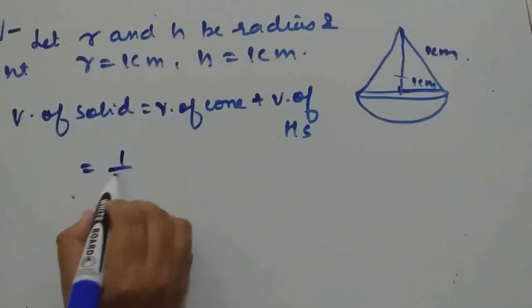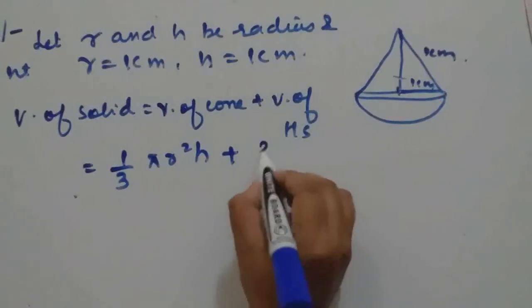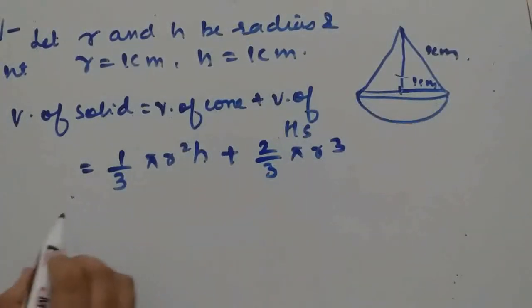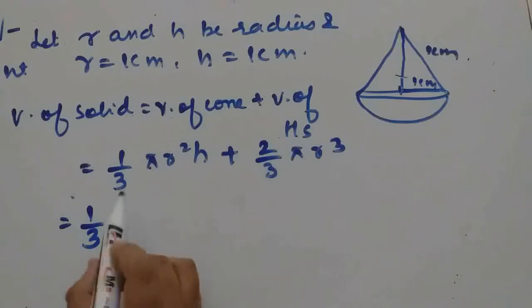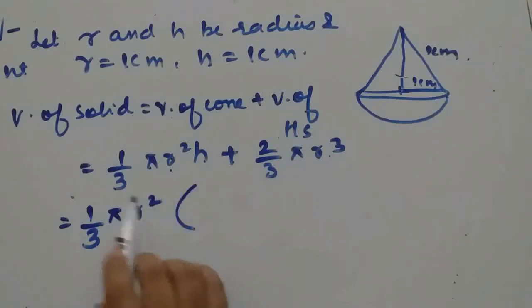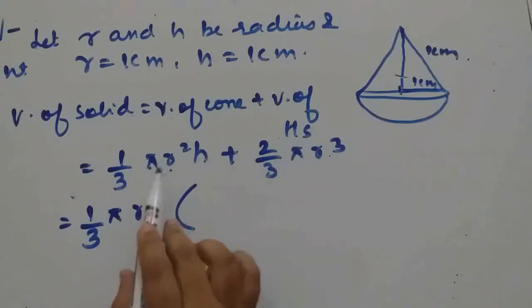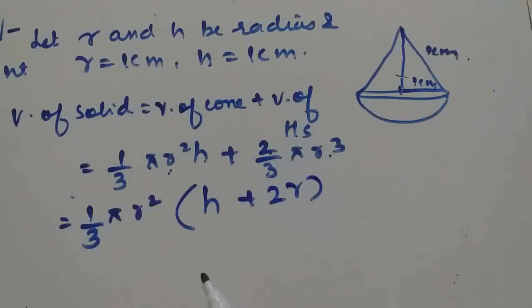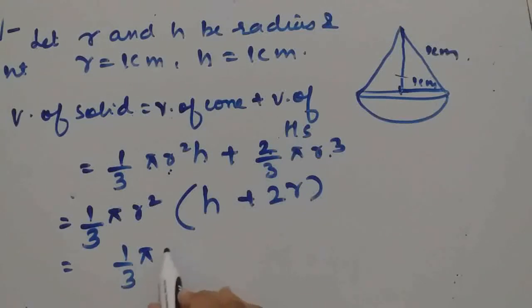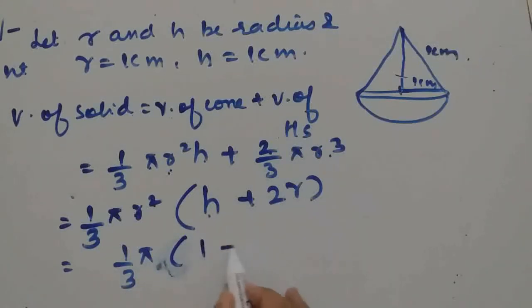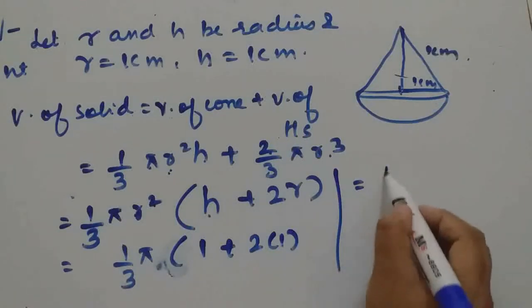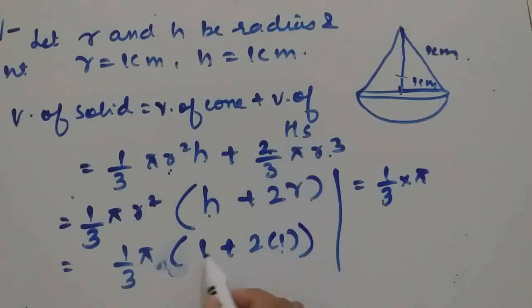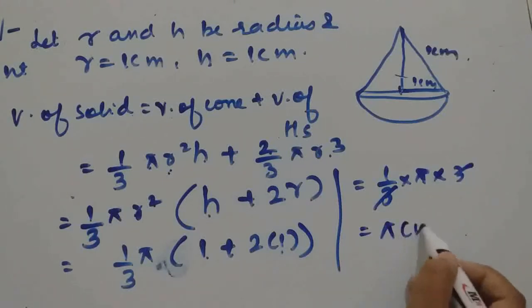Volume of cone is (1/3)πR²H and volume of hemisphere is (2/3)πR³. Taking out (1/3), π, and R² as common factors, the remaining terms inside the bracket are H and 2R. Substituting R=1 and H=1, we get (1/3)π(1 + 2) = π. So the answer is π cm³.